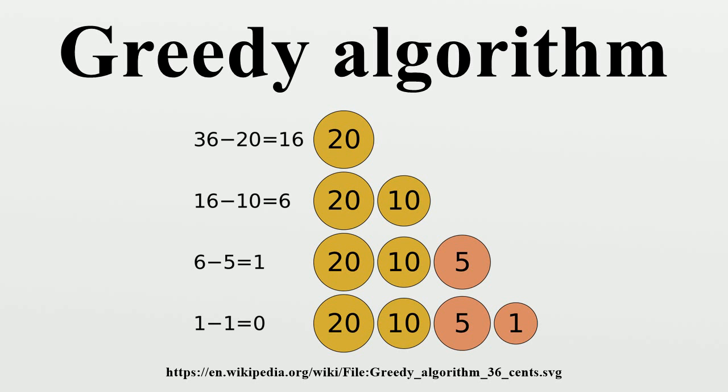Greedy algorithms produce good solutions on some mathematical problems, but not on others. Most problems for which they work will have two properties: Greedy choice property - We can make whatever choice seems best at the moment and then solve the sub-problems that arise later.